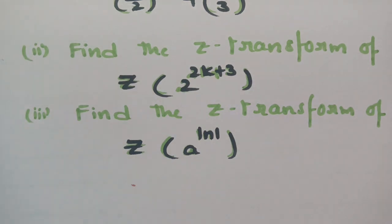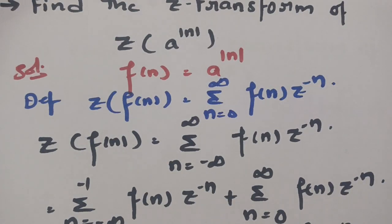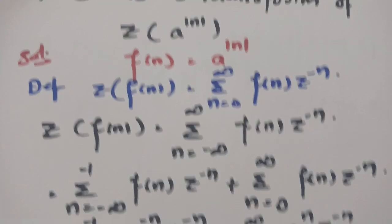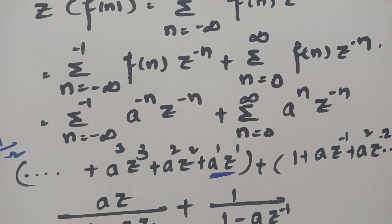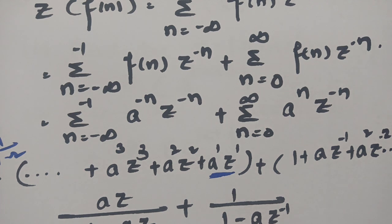This is the solution for Z{a^|n|}. This is also quite straightforward if you follow these steps. These three are repeatedly asked questions — please practice and pass it on to your friends. Thank you so much for watching and staying till the end.